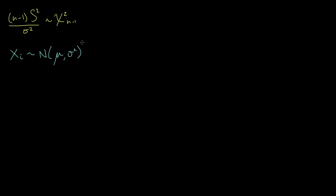If we take this random variable, minus the mu — its mean — and divide by its standard deviation (not the variance, just the standard deviation), this is called standardization. This is going to give us another normal random variable, but with mean zero and a variance of one. So we've got a standard normal distribution.